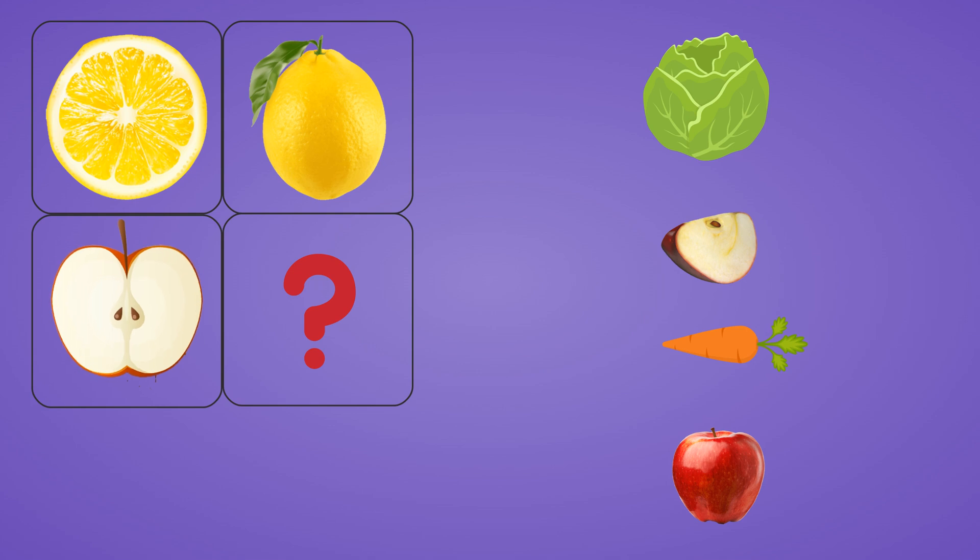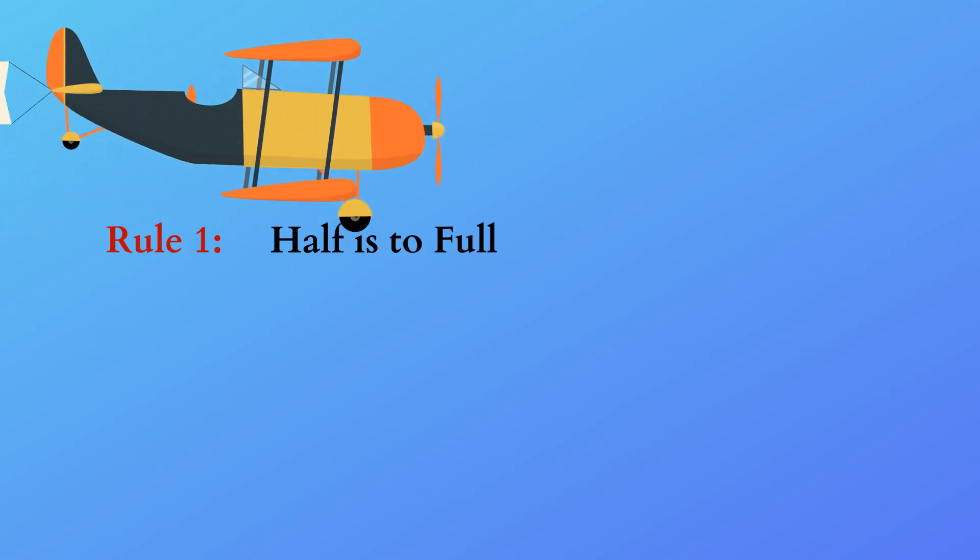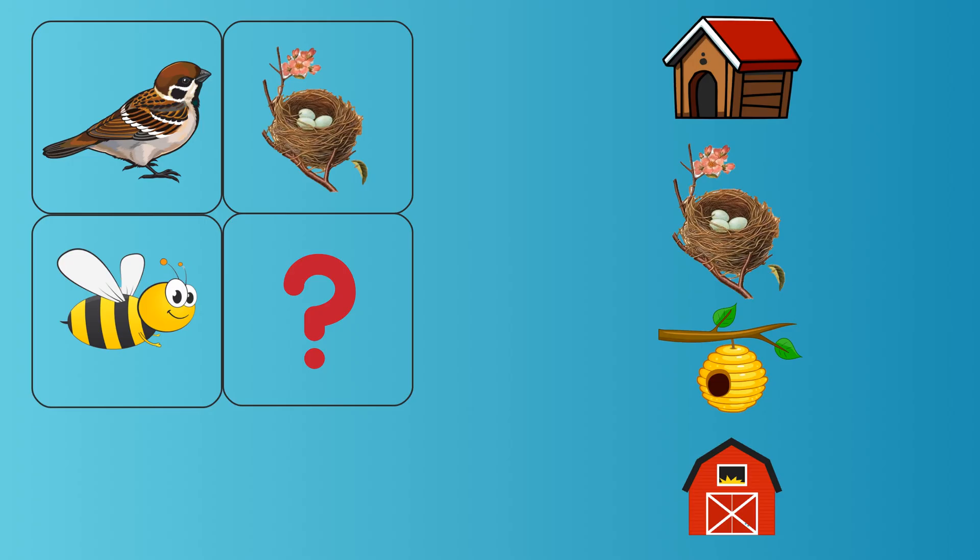Let's look at the second rule: animal and its home. In this question, the first picture is a bird and the second picture is a nest. How are they related? A bird lives in a nest. Let's apply the same rule to the bottom set. Where does a bee live? A bee lives in a beehive.